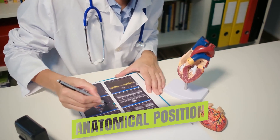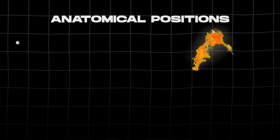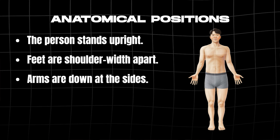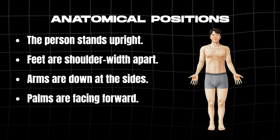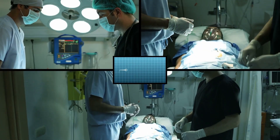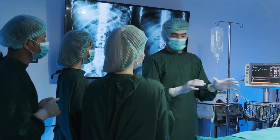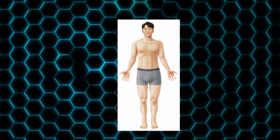Before we get into directional terms, we need to understand the anatomical position itself. This is the standard position used in medical terminology. The person stands upright, feet are shoulder width apart, arms are down at the sides, palms are facing forward. No matter how the patient is actually positioned in surgery, all directional terms refer back to this standard position. This makes sure there is a universal language to identify the exact body parts and locations being worked with.